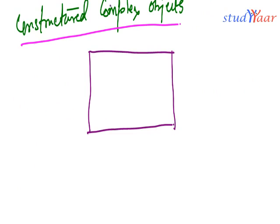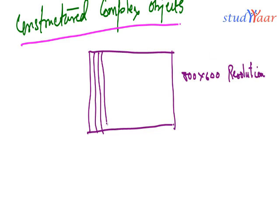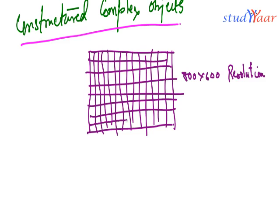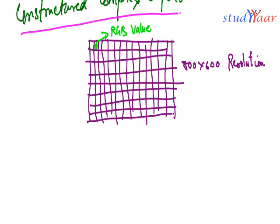This bitmap image has an 800 by 600 resolution. In this there is no structure as such. What is going to happen is we are going to store a large number of RGB values that correspond to each pixel of this image. All these RGB values are a collection of unstructured elements. So this is one RGB value.